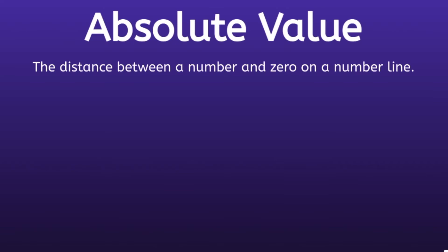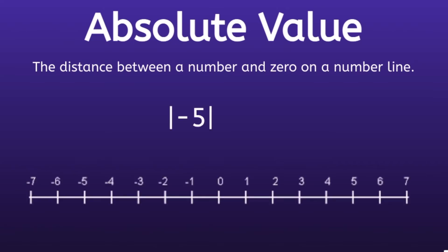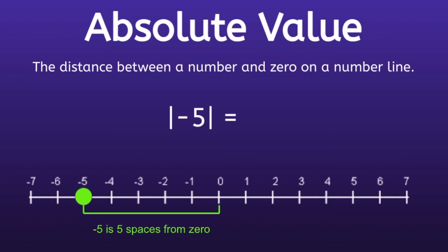For example, if we wanted to find the absolute value of negative 5, the first thing we would do is find negative 5 on a number line. There it is! Now we have to count the number of spaces between negative 5 and 0. When we count the spaces, we can see that there are 5 spaces from negative 5 to 0. So the absolute value of negative 5 is 5.